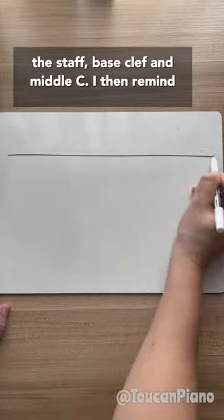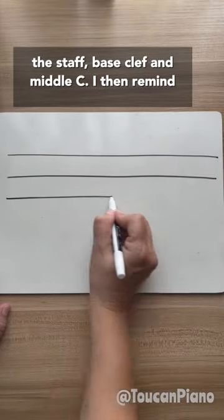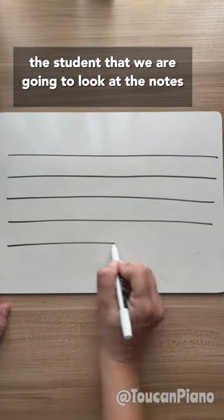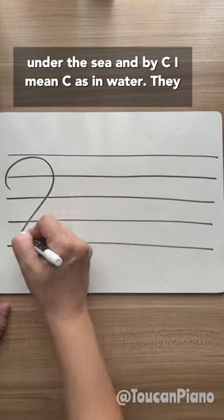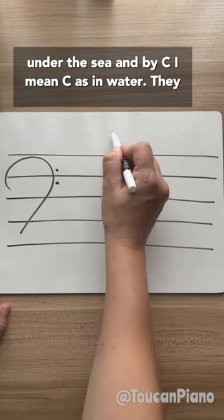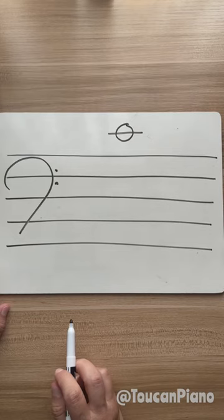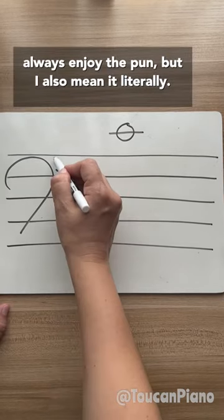I start by drawing out the staff, bass clef, and middle C. I then remind the student that we are going to look at the notes under the C — and by C, I mean sea, as in water. They always enjoy the pun, but I also mean it literally.